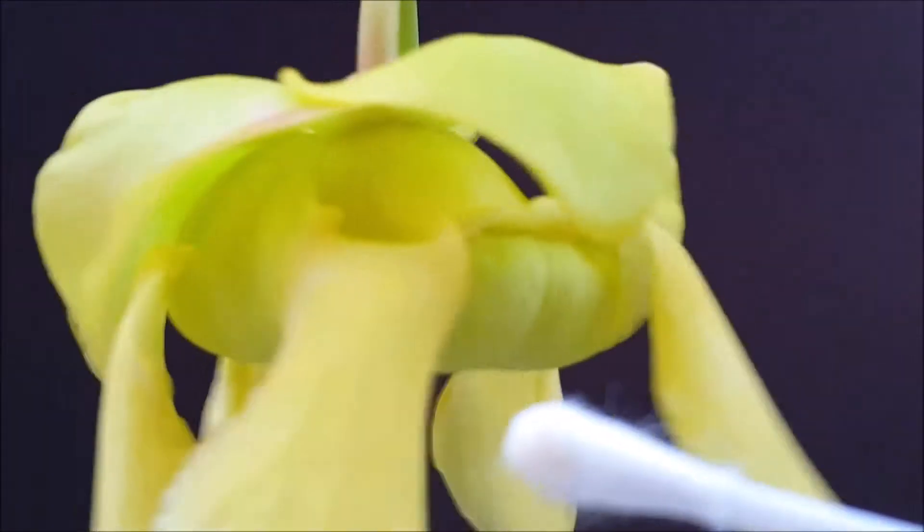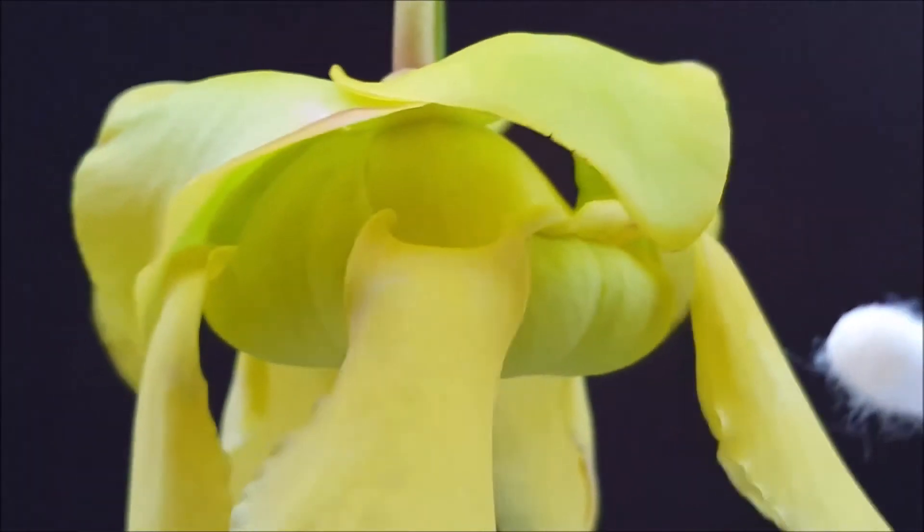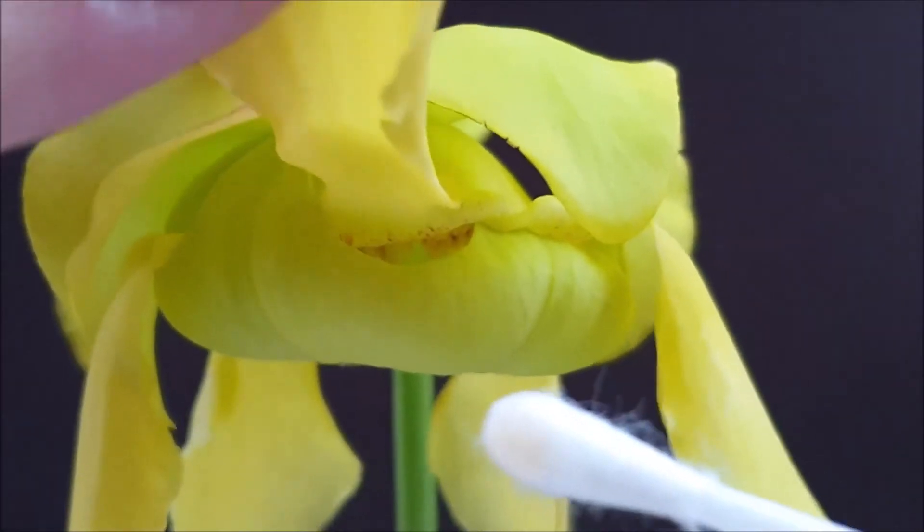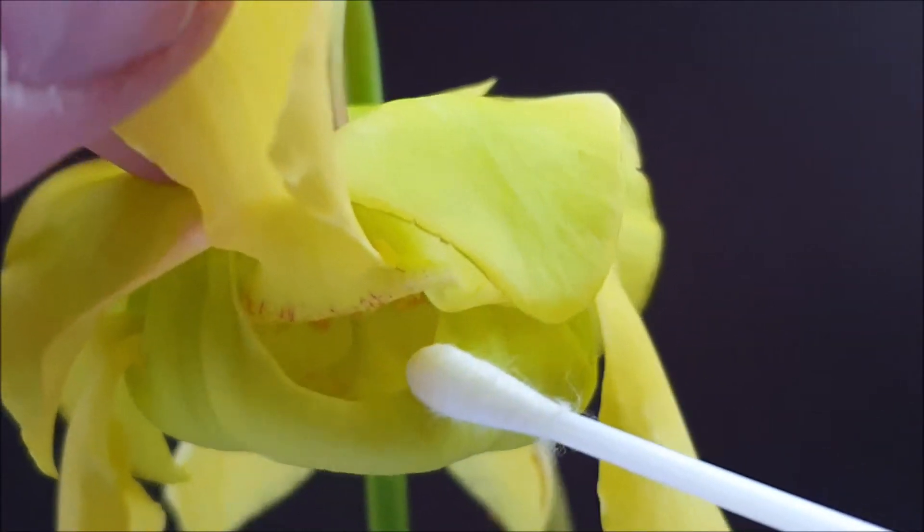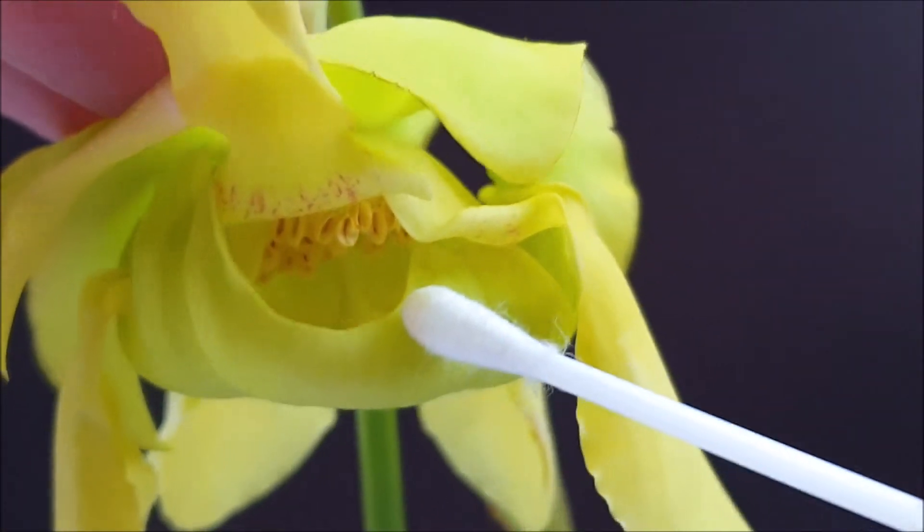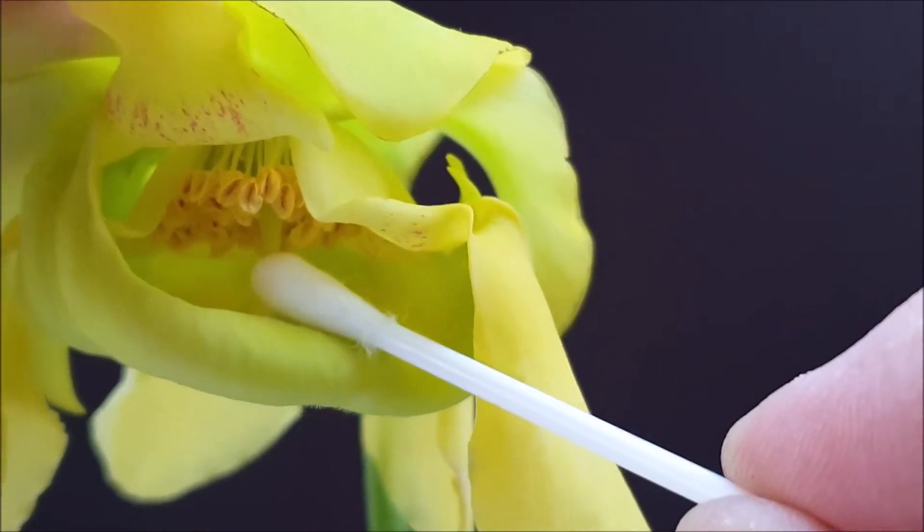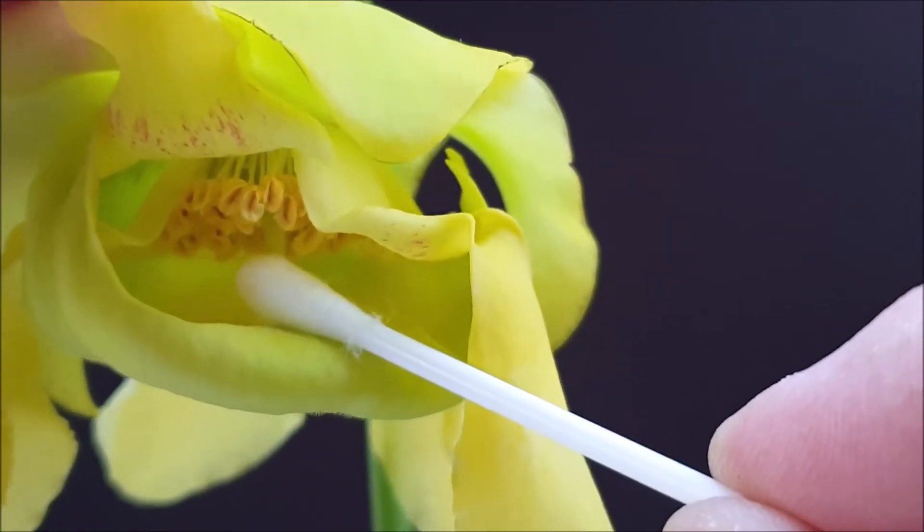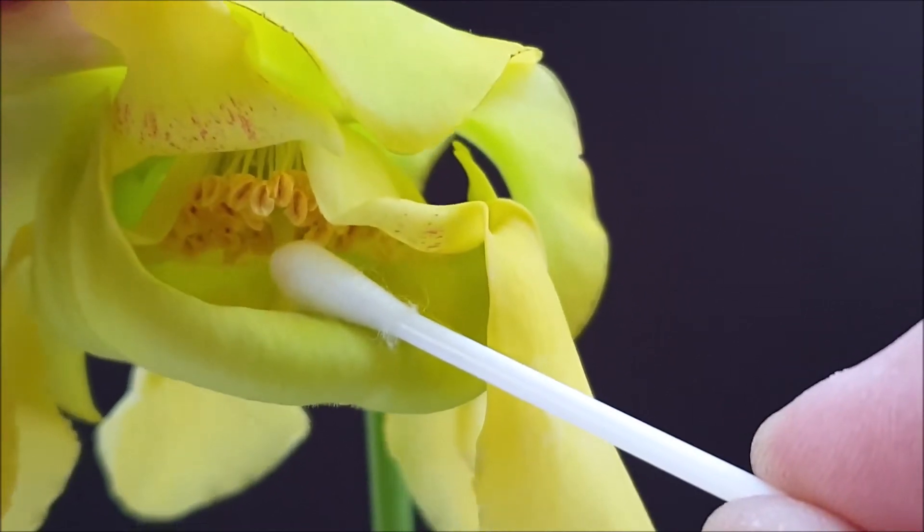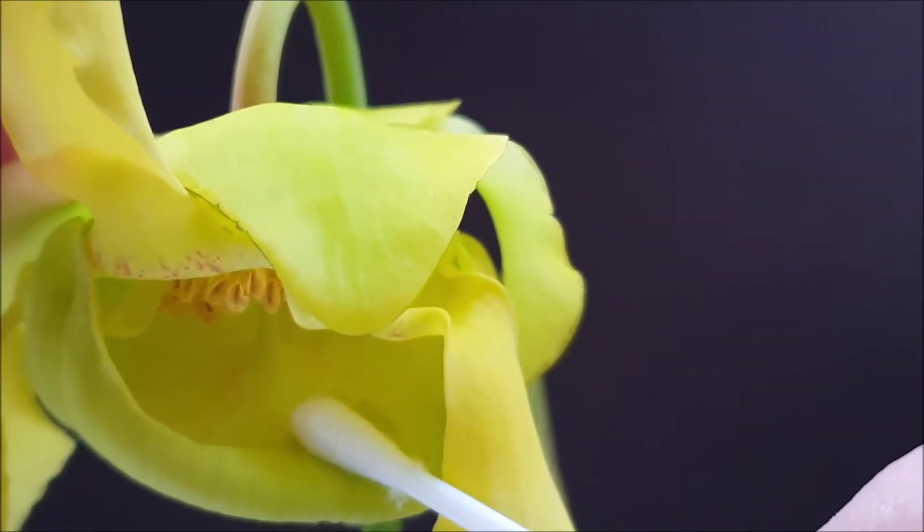So once the insect or the bumblebee goes into the flower, it then—I'll lift up one of these petals to show you what I mean—it then crawls around on the inside there, and that's where all the pollen is. And those structures over here, they're the stamens, and that's the male part of the flower that contains all the pollen.